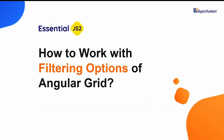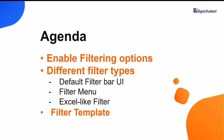In this video, I'm going to explain how to enable the filtering options of Angular Grid, with which you can easily filter and retrieve the desired records. Along with that, I'll also list out the different filter types available on Angular Grid, like the default filter bar UI, filter menu, and Excel-like filtering options. You can also customize the filter UI by adding custom components using the filter template options.